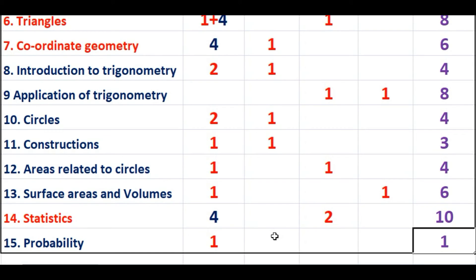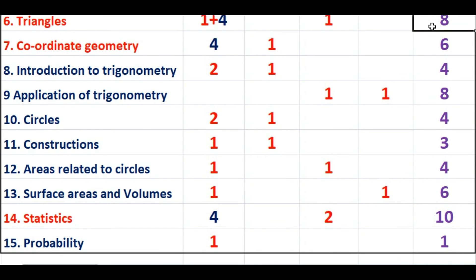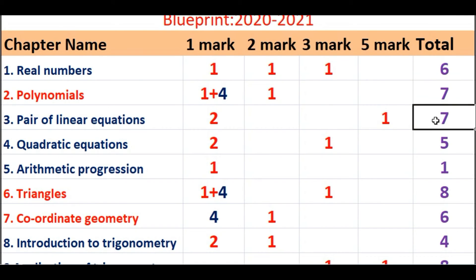This time from Probability and Arithmetic Progression, only one mark has been asked — this can be changed. More weightage is given to Statistics, Application of Trigonometry, Triangles, Polynomials, and Pair of Linear Equations. You need to concentrate more on these chapters. Arithmetic Progression and Probability have only one mark each, but these chapters are still important, so plan accordingly and start studying.